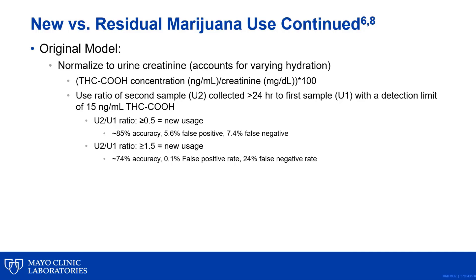If that ratio was greater than or equal to 0.5, it indicated new usage. However, this only led to 85% accuracy and a high 5.6% false positive rate. Therefore, it was updated so that if the ratio was actually greater than or equal to 1.5, it indicated new usage of marijuana. This resulted in a much lower false positive rate of 0.1%, but a higher false negative rate.